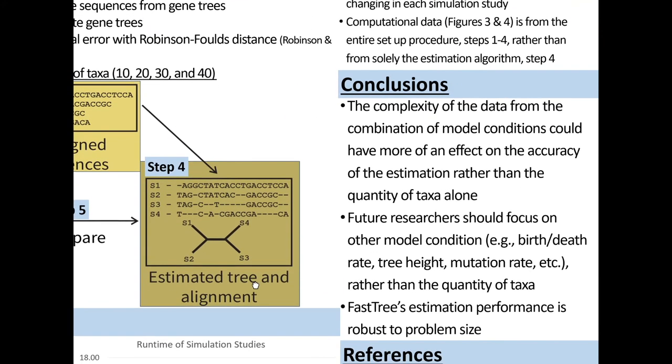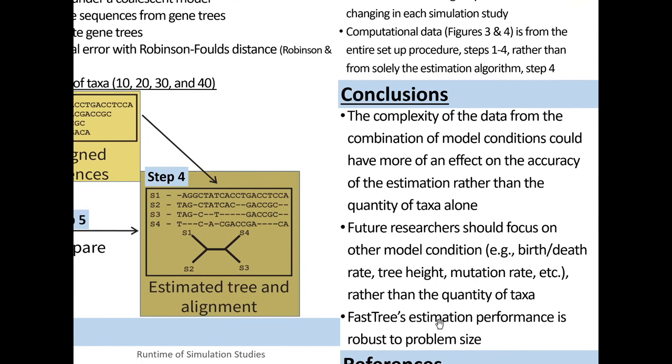As I mentioned in my conclusions, FastTree's estimation performance is robust to problem size. The complexity of the data from the combination of model conditions could have more of an effect on the accuracy than the quantity of taxa alone. Future researchers should focus on other model conditions such as birth rate, death rate, tree height, mutation rate, etc., rather than the quantity of taxa.